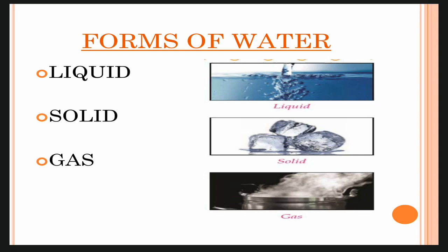Water has three forms: solid, liquid and gas. Its basic form is liquid, which can change to solid and gas. The water in the oceans, lakes, ponds and wells is in the form of liquid. The water vapours present in the air is in the form of gas. The ice cubes and snow on the snow-capped mountains are in the form of solid.